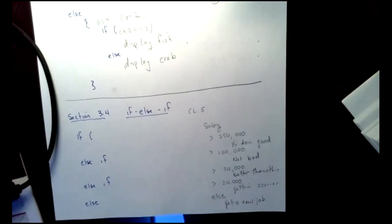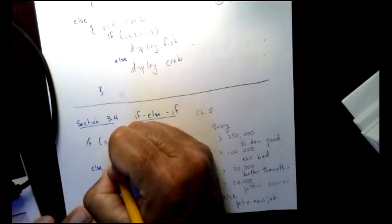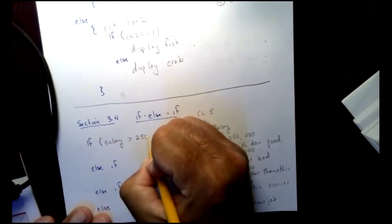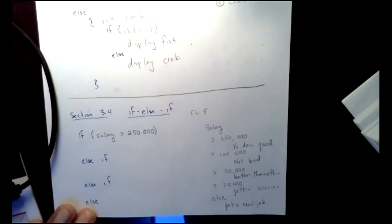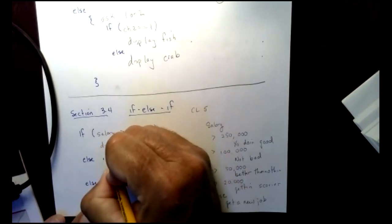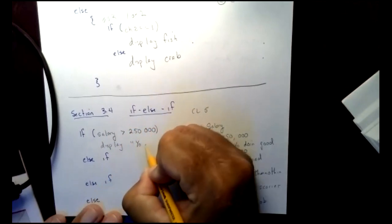All right. So we're going to put this into an if statement. And this is where this whole idea of if, else, ifs work. So I'm going to start out with my first if and say, if salary is greater than 250,000 with no commas, then I'm going to display, yo, doing good.